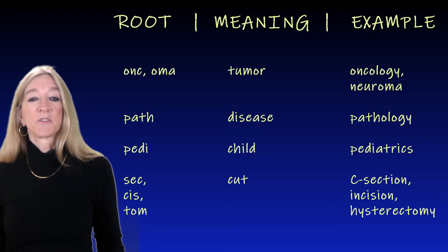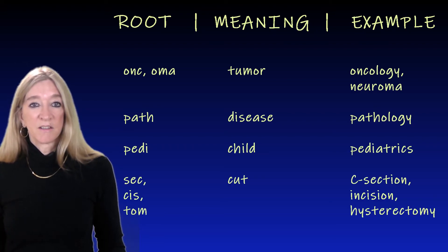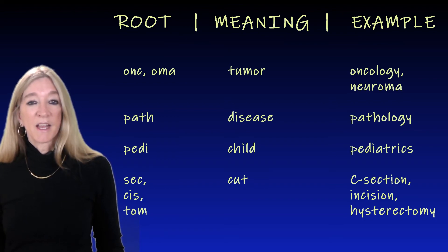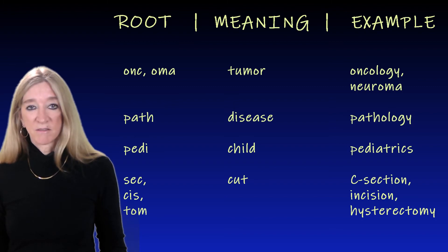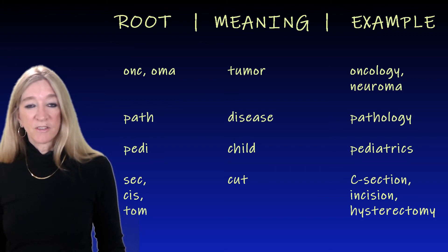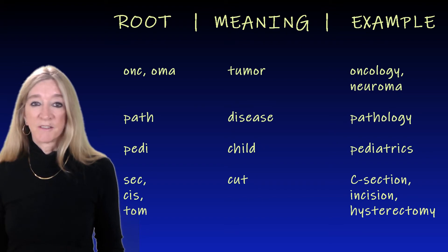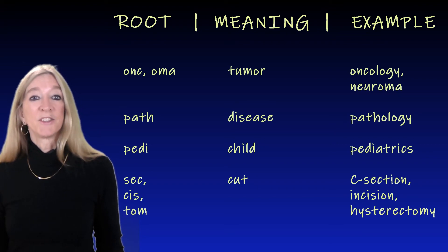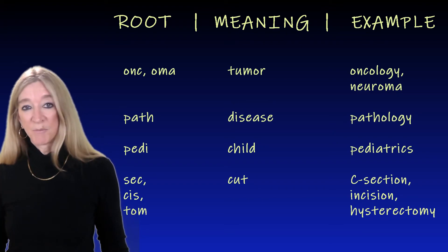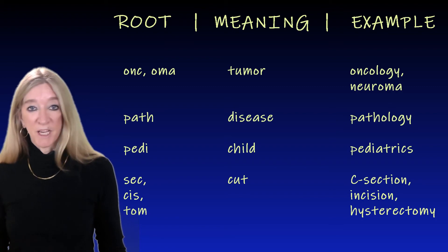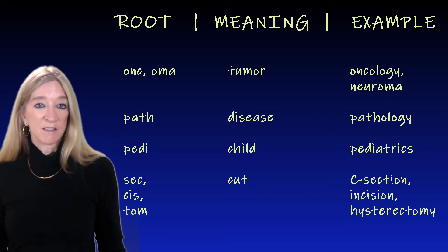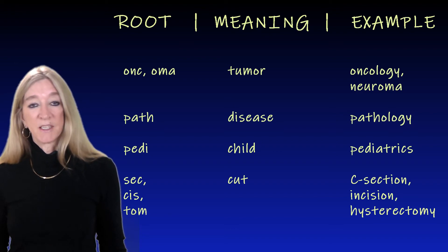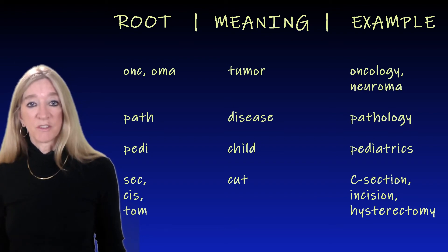The next roots, 'sec,' 'cis,' and 'tom,' all meaning cut. A C-section is a cut in the abdomen to deliver a baby. An incision is cutting in. And a hysterectomy is cutting out the uterus.